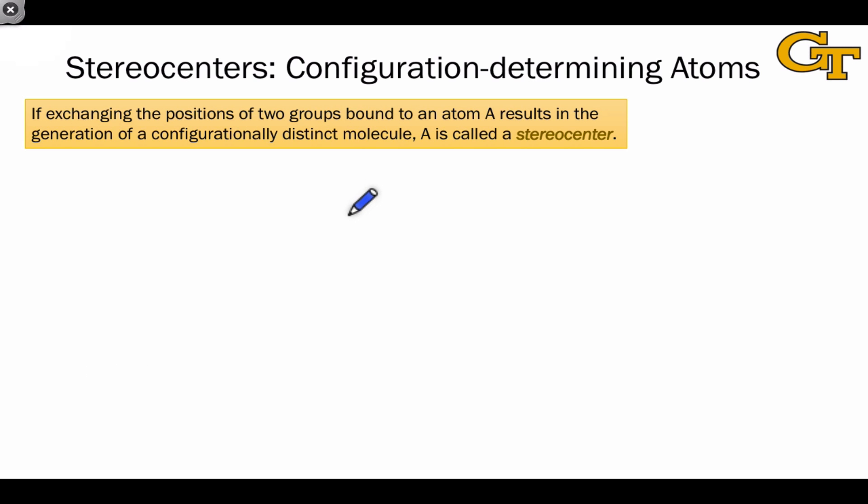Strictly speaking, a stereocenter is defined as follows. If we run a thought experiment where we exchange the positions of two groups bound to an atom, which we're calling A here, and that results in the generation of a configurationally distinct molecule—a simpler term for this is simply a stereoisomer—then that atom is called a stereocenter.